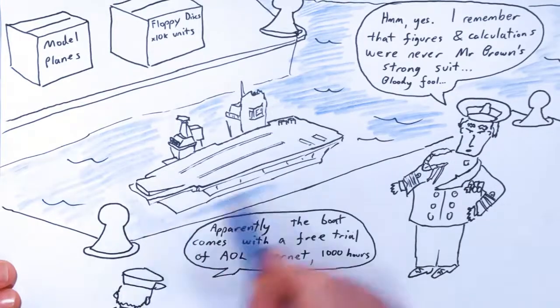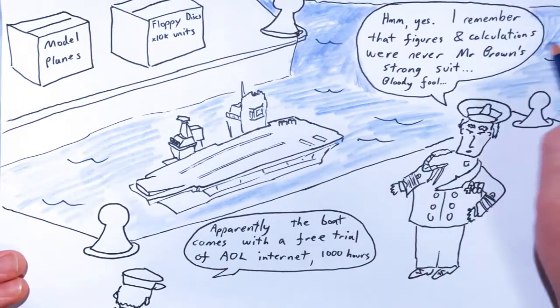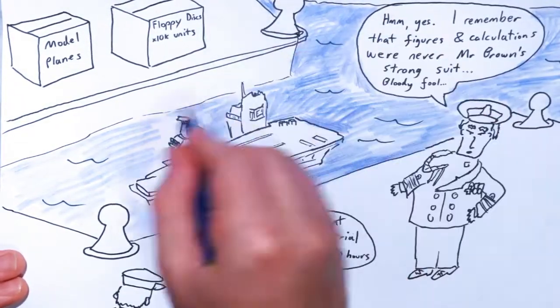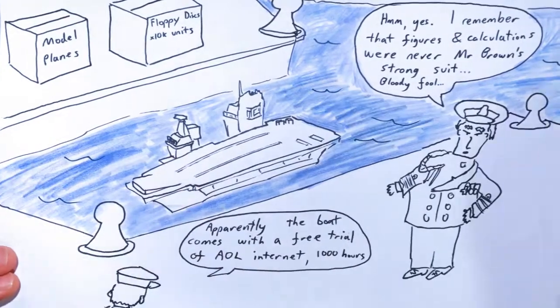That was Gordon Brown that signed off on that one. £6 billion and rising so far, plus more if the pound goes down further against the dollar, plus we're going to have to buy fighter jets to put on the thing.